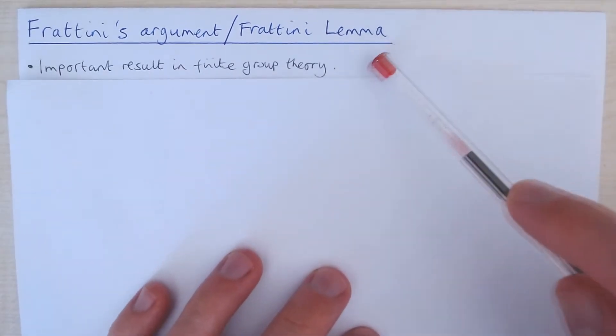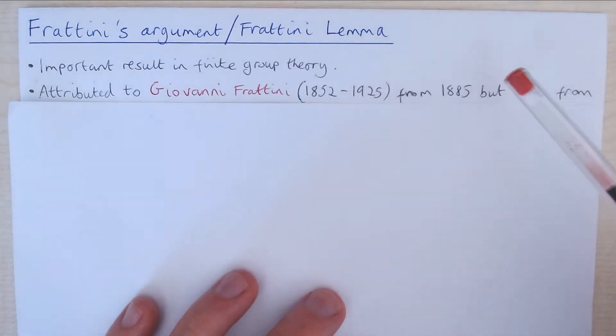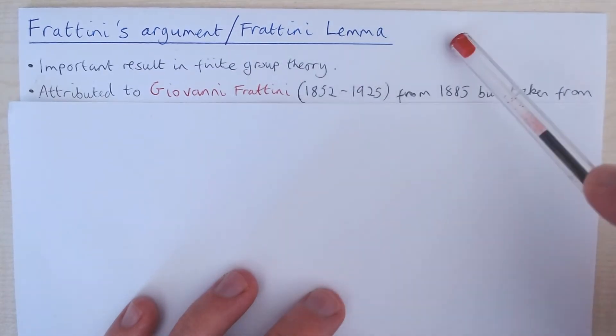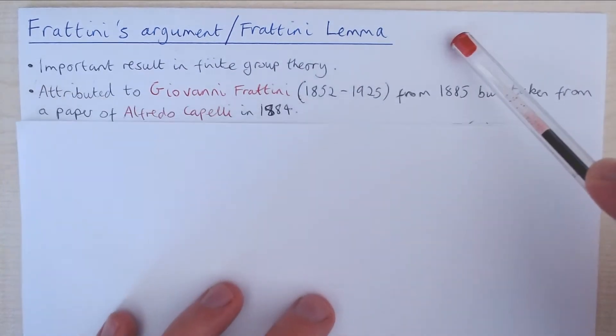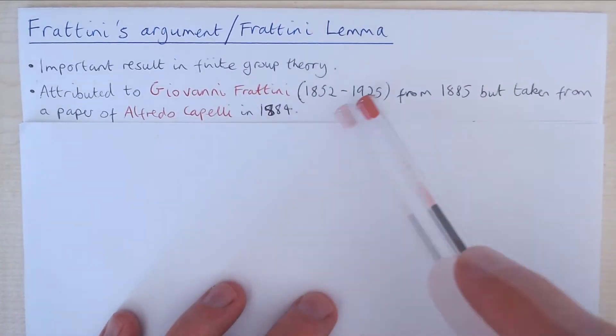It's an important result in finite group theory, and it's commonly attributed to Giovanni Frattini, an Italian mathematician from 1885, but he actually admitted to taking it from a paper of Alfredo Capelli in 1884.